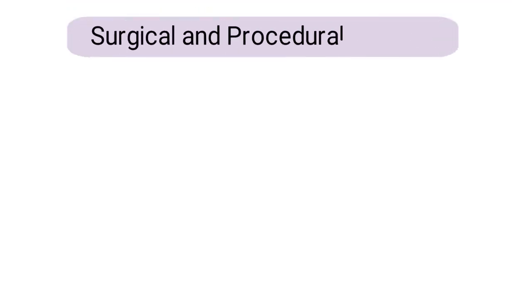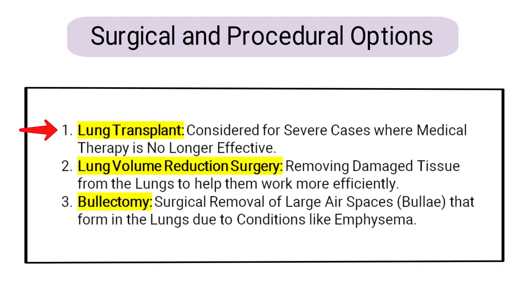Next are the surgical and procedural options, which occur more often in severe cases. This includes a lung transplant, considered for severe cases where medical therapy is no longer effective; lung volume reduction surgery, which involves removing damaged tissue from the lungs to help them work more efficiently; and a bullectomy, which is the surgical removal of large air spaces that form in the lungs due to conditions like emphysema.